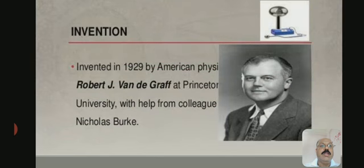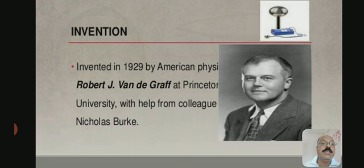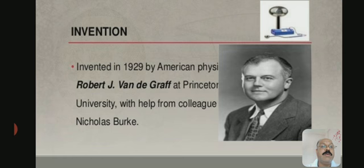The Van de Graaff generator was invented in 1929 and modified in 1931 by American physicist Robert J. Van de Graaff at Princeton University with the help of his colleague Nicole Burek.